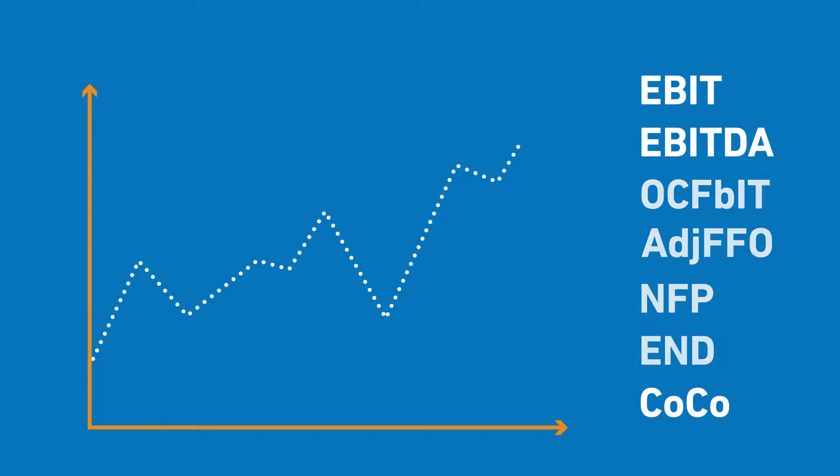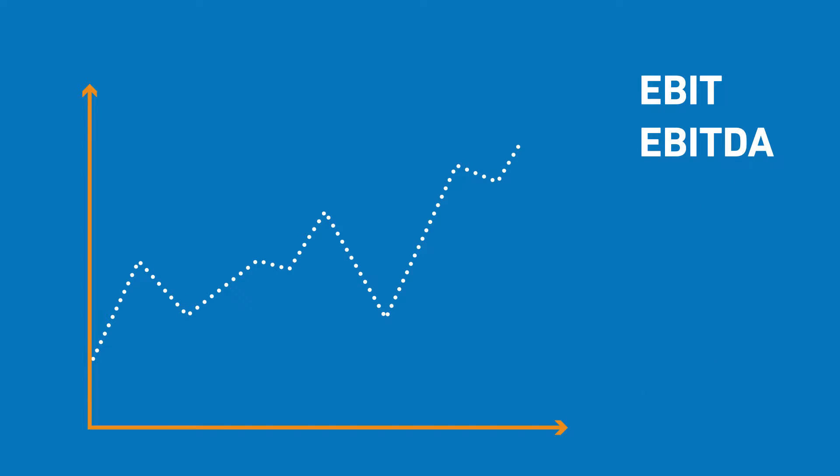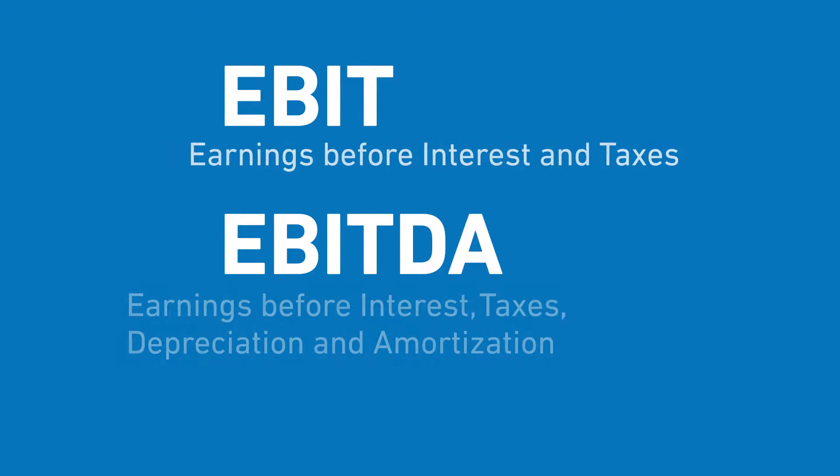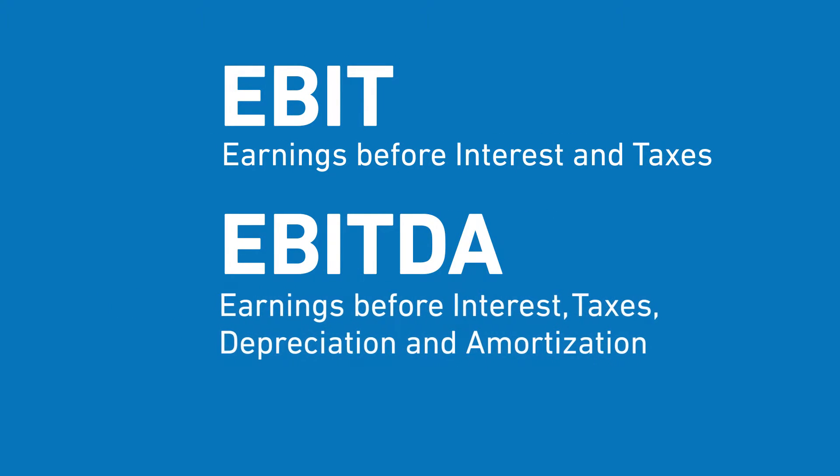Today: EBIT and EBITDA. EBIT and EBITDA are so-called key performance indicators for earnings. We use them to compare the developments of the result and manage our business activities.